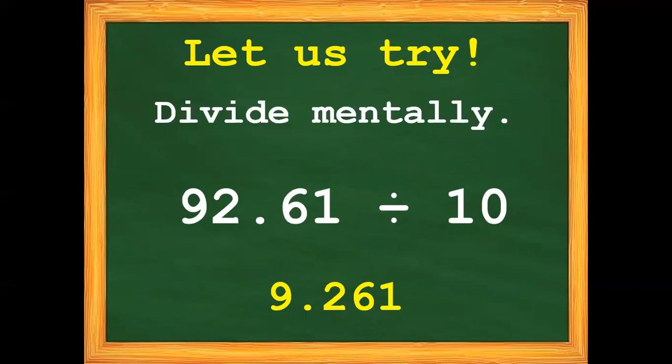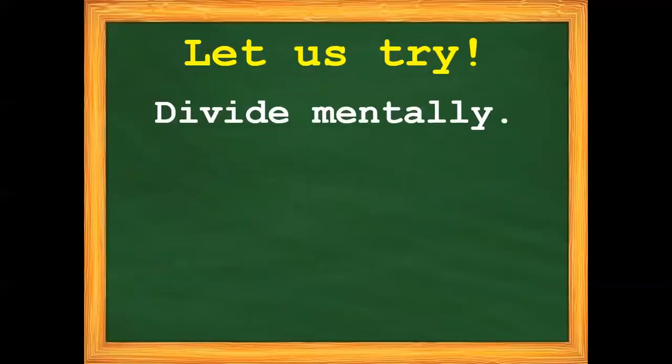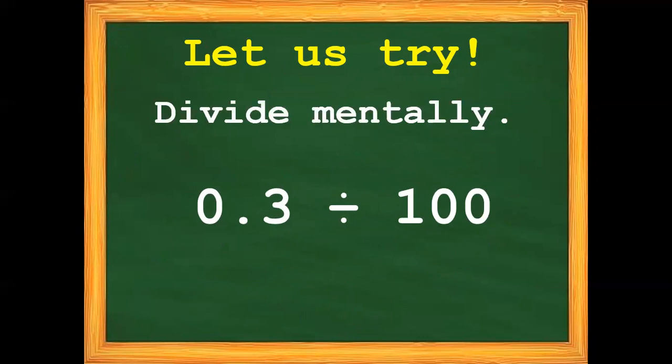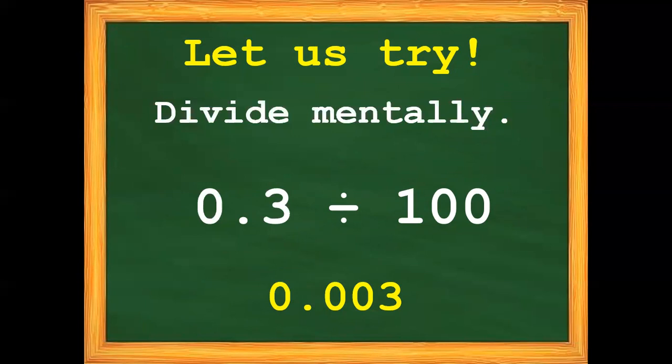And finally, let's solve example number 5. Divide it mentally. We have 3 tenths divided by 100. The correct answer is 3 thousandths. Did you get the same answer? Excellent!